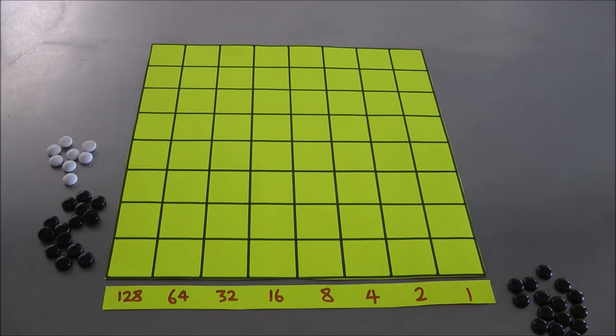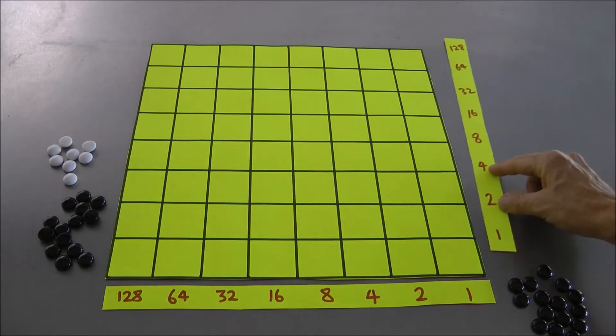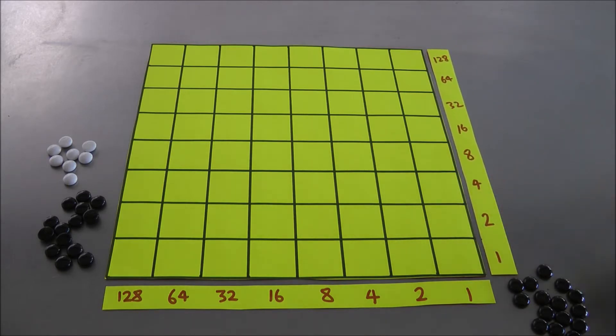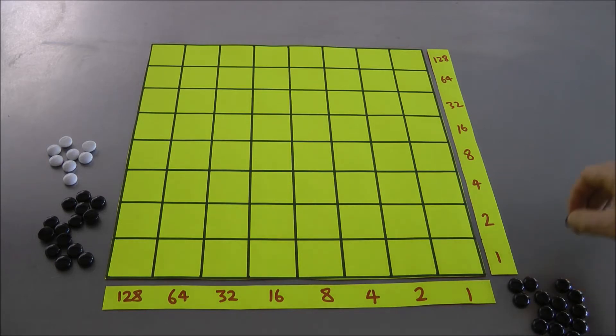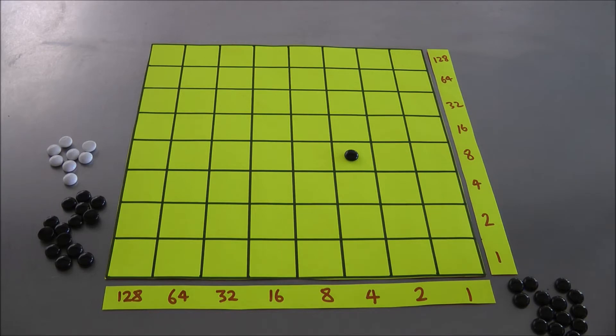But then Napier suggested, well if we've got the columns labelled by the powers of 2, why don't we also label the rows by the powers of 2? Alright, that's interesting. And then he said, OK, put a counter anywhere you like on this particular array now, but think of its value as worth the product of its row number and its column number.